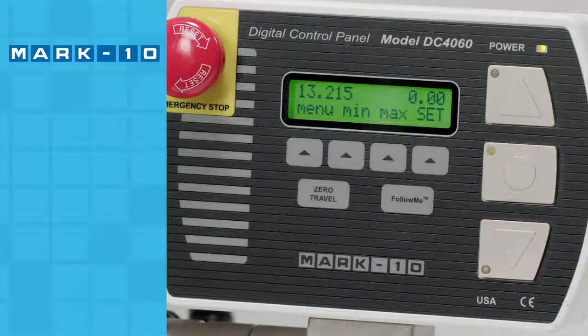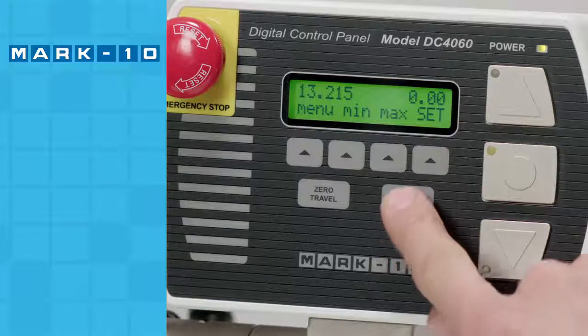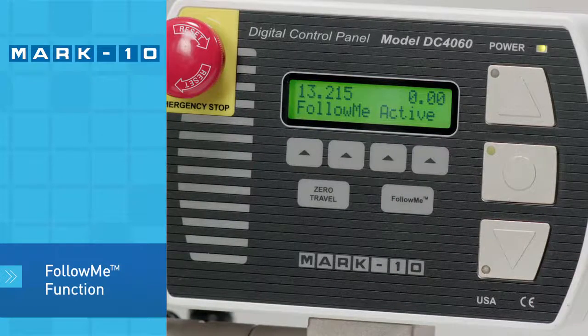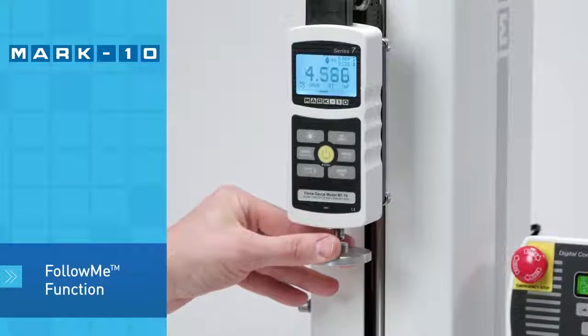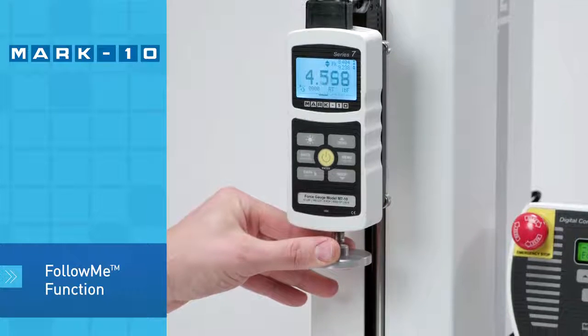Cross-head positioning prior to or after a test is easy with the unique follow-me function. Simply push and pull on the force gauge or load cell to move the cross-head. The greater the force, the faster the speed.